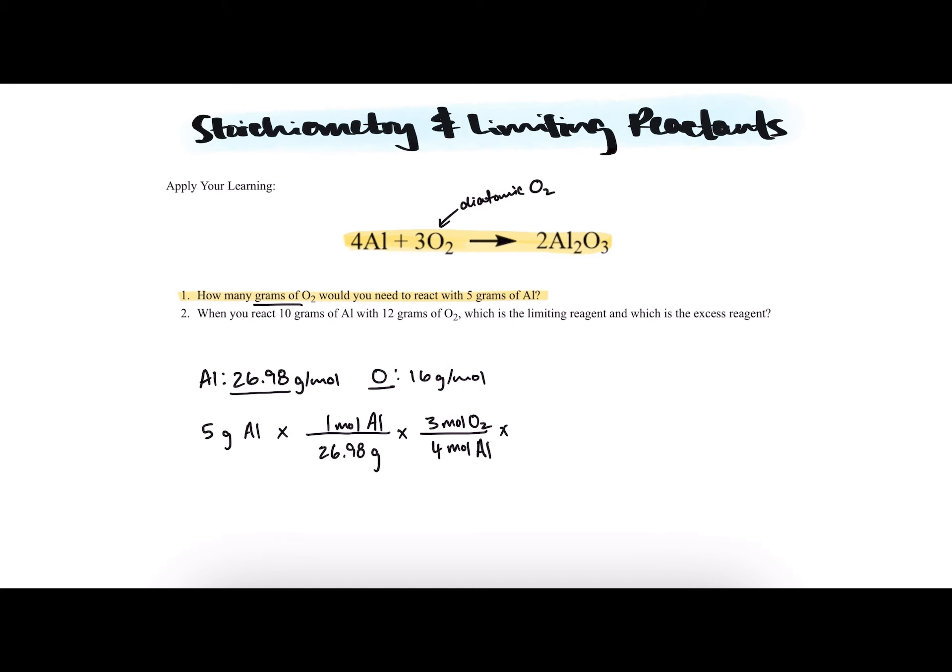So we have 3 moles of O2 and then we want to convert that to grams of O2. We'll multiply by this molar mass.